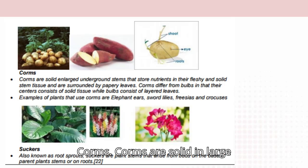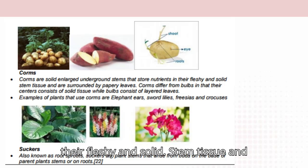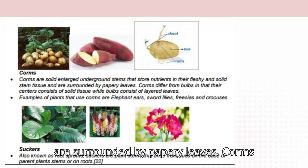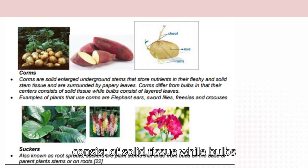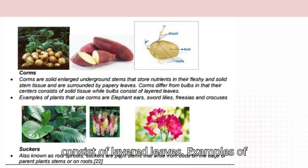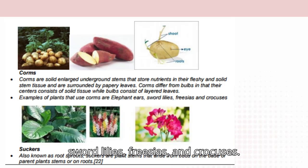Corms: corms are solid, large underground stems that store nutrients in their fleshy and solid stem tissue and are surrounded by papery leaves. Corms differ from bulbs in that their centers consist of solid tissue, while bulbs consist of layered leaves. Examples of plants that use corms are elephant ears, sword lilies, freesias, and crocuses.